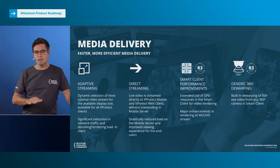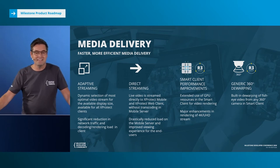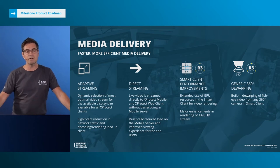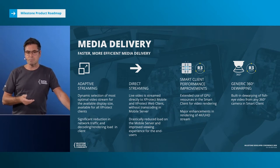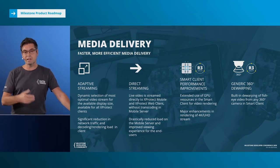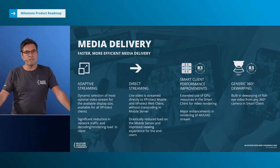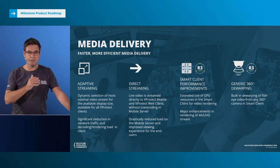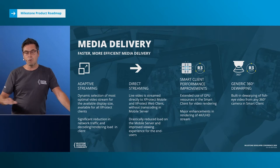In media delivery, we've done a couple of things and I'll list the top four items from this year's work. Starting from the left, we have adaptive streaming — a new way to work with multiple streams and optimize not only the viewing experience in the Smart Client, but also the network load between the server environment and the client. This is important for on-premises installations and also for cloud deployments where XProtect sits in the cloud and viewing clients are on-premises.